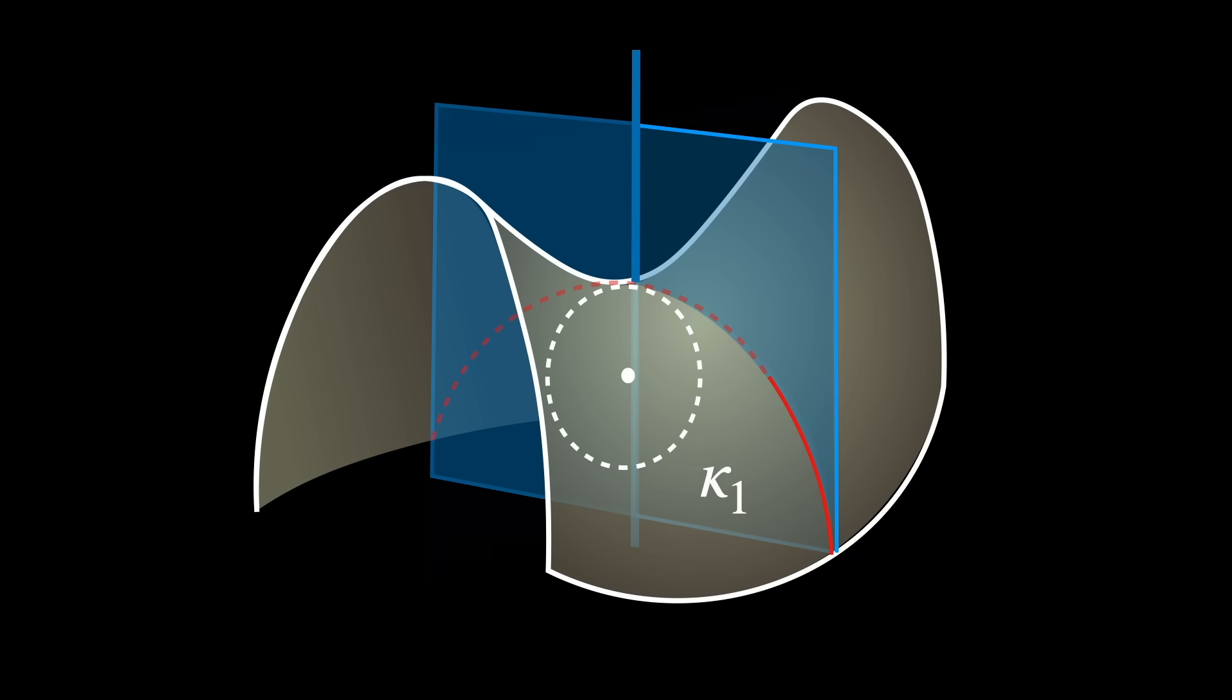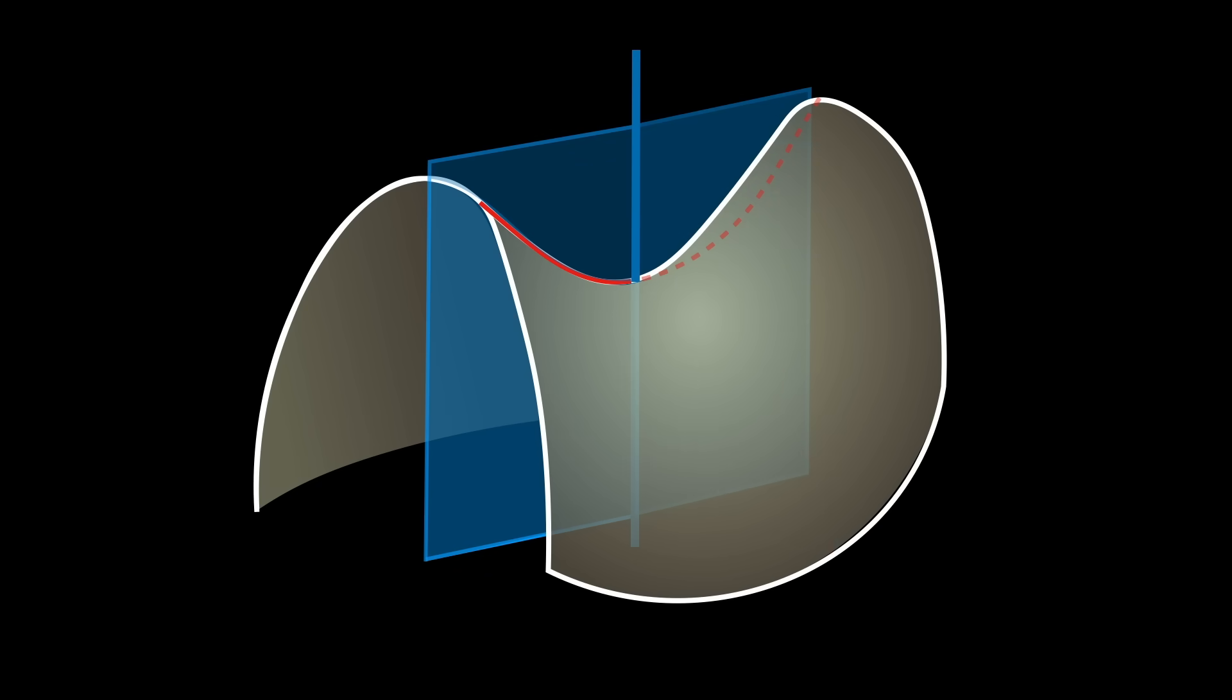The second special kind of normal slice is the one that produces the normal curve that bends the least, which gives minimum curvature, and is called the principal curvature kappa 2.